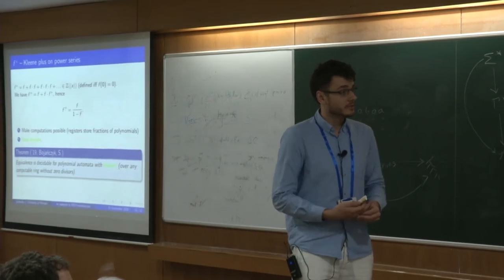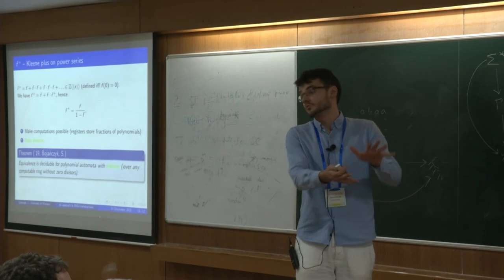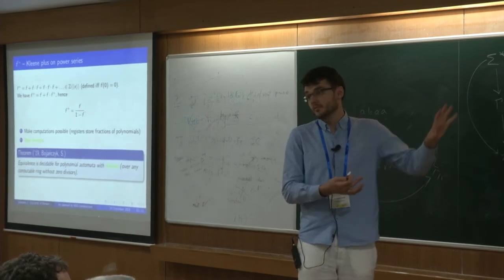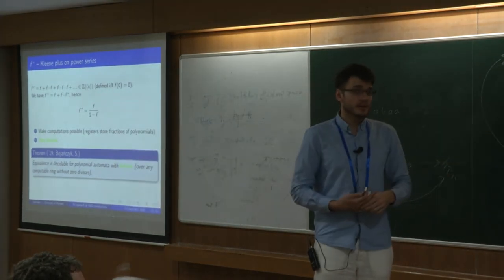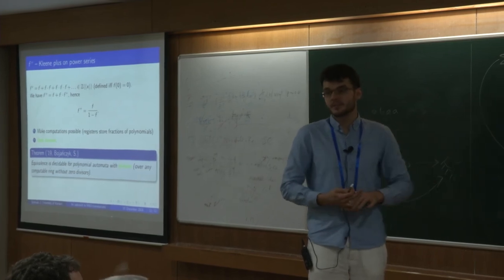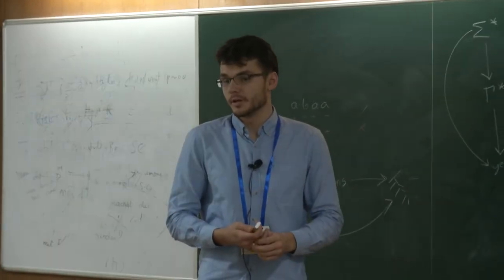So this finishes the proof of the main result. It's a way of simulating register transducers over source graph algebra, or modulo the relation that we mentioned, with formal power series. It uses Kleene star, but if you express it as a rational function and prove an additional lemma, equivalence is decidable for it as well.